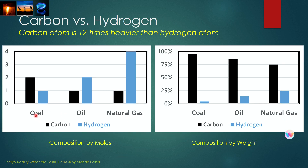When we compare coal versus oil versus natural gas in terms of their composition, on a molar basis, coal contains two times as much carbon as hydrogen. Oil contains one carbon versus two proportions of hydrogen. And natural gas contains one carbon and four times as much hydrogen. So coal contains the highest amount of carbon versus hydrogen, and natural gas contains the least amount of carbon compared to hydrogen. These are molar proportions — the number of moles of carbon versus hydrogen which are present.